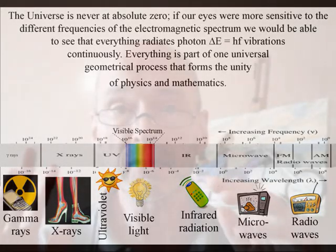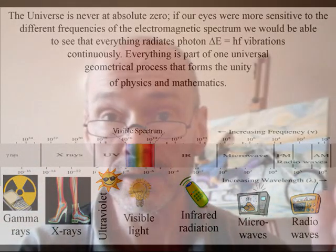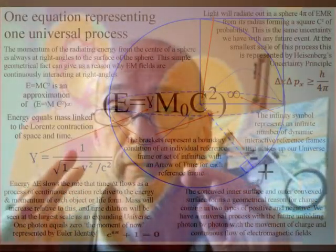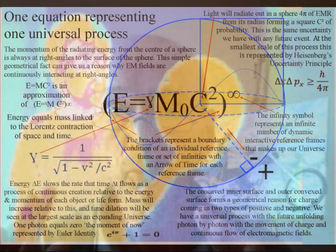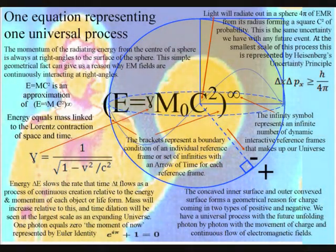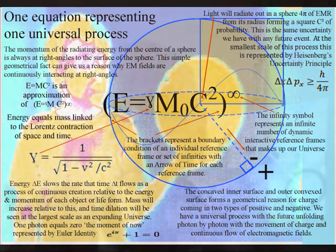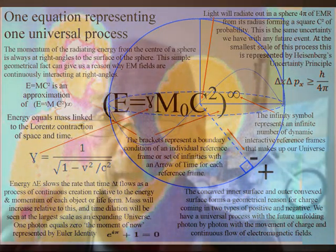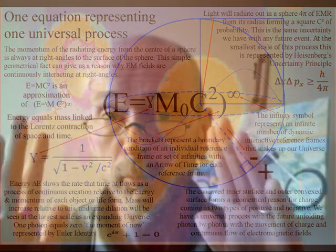This continuous process of absorption and emission of light photon energy forms the ever-changing world of our everyday life, forming the passage of time with the outward momentum of light forming an arrow of time relative to each object or life form.